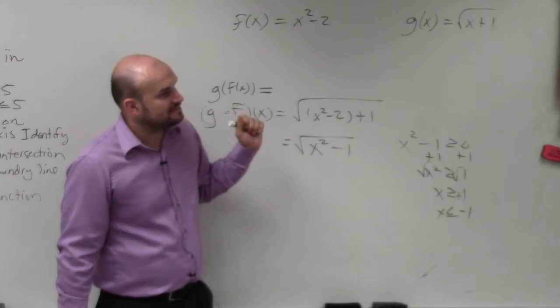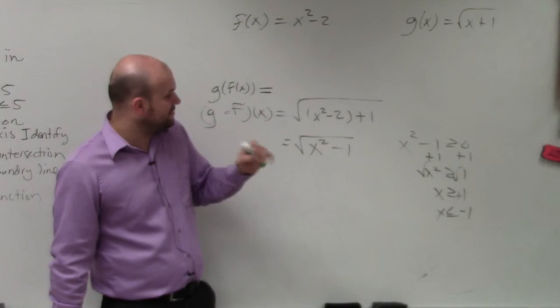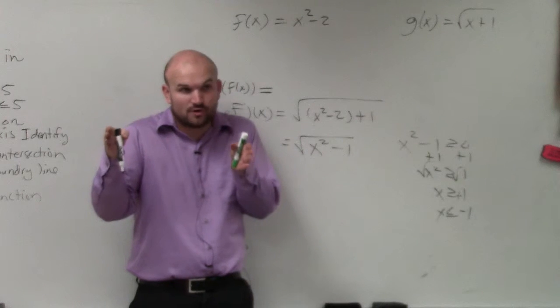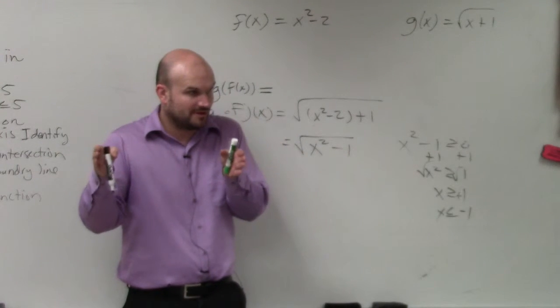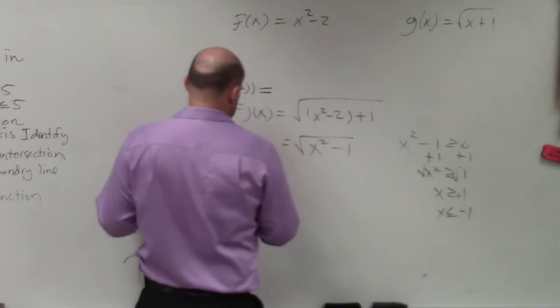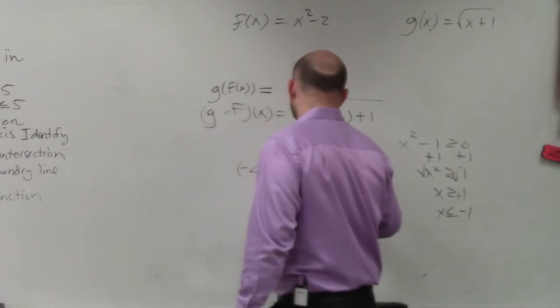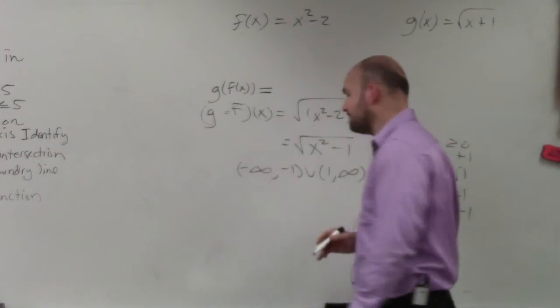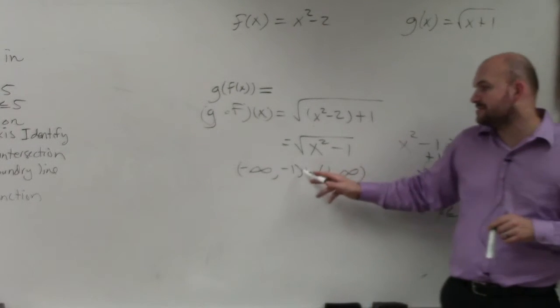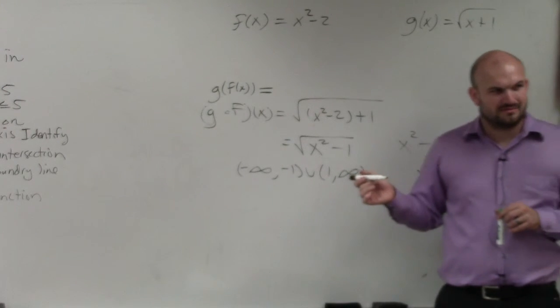Let's just try to think about this rationally. So we know that all numbers from 1 to infinity will be true for this. All numbers less than negative 1 to infinity will work. So the only thing we know is that the values basically between negative 1 and positive 1 do not work. So we'd have negative infinity to negative 1 union 1 to infinity. The values between negative 1 and 1 do not work. Does that kind of make sense?